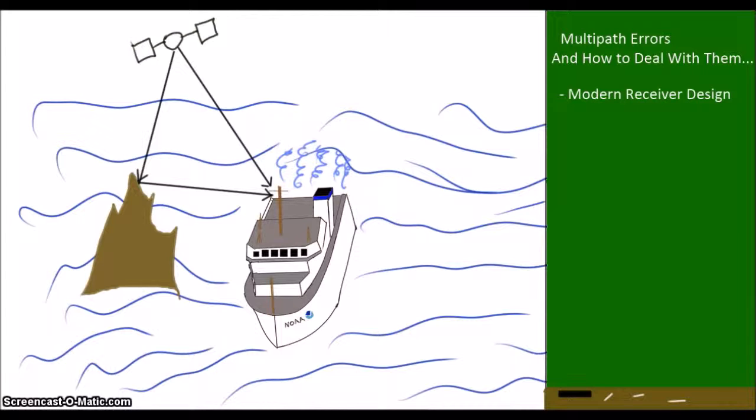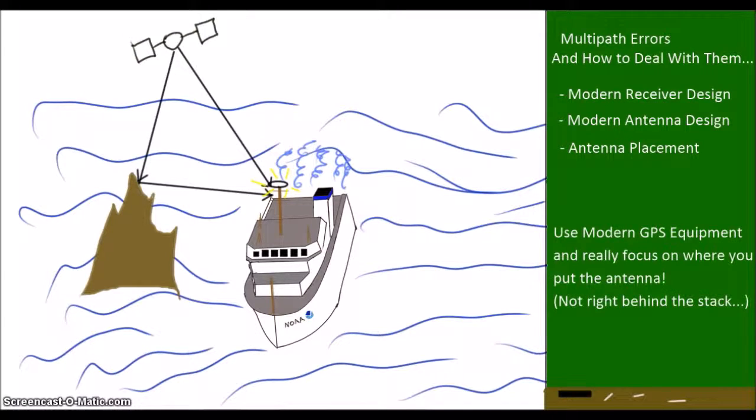In addition, antennas can be designed to help eliminate multipath. We can also help minimize this error by installing the antenna in a location with a good clear view of the sky and no obstructions, for instance high up on a mast. Because multipath errors are local, correcting for them is very difficult, so the best approach is to avoid them with a smart receiver, some special antenna design, and a good antenna placement.